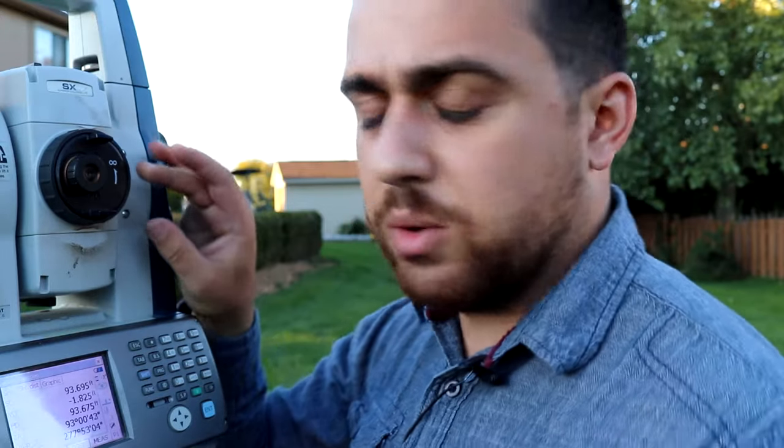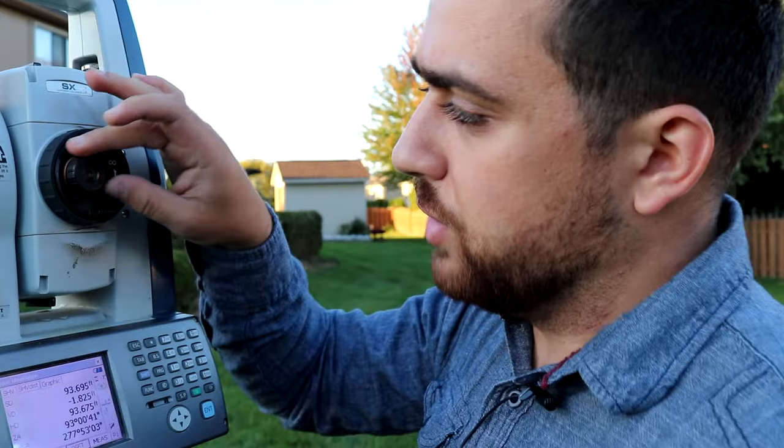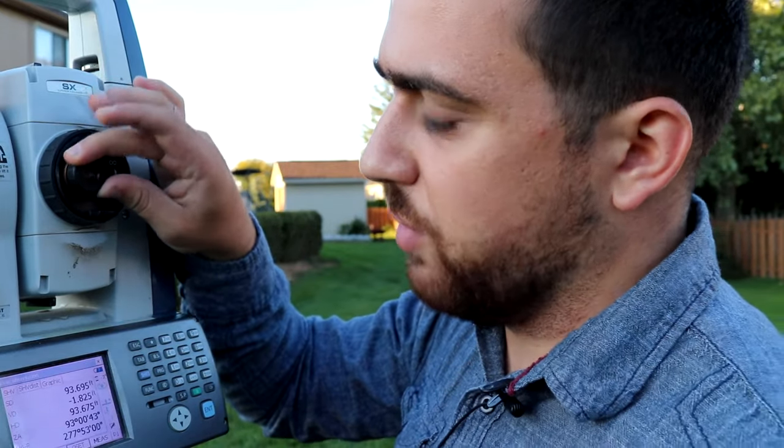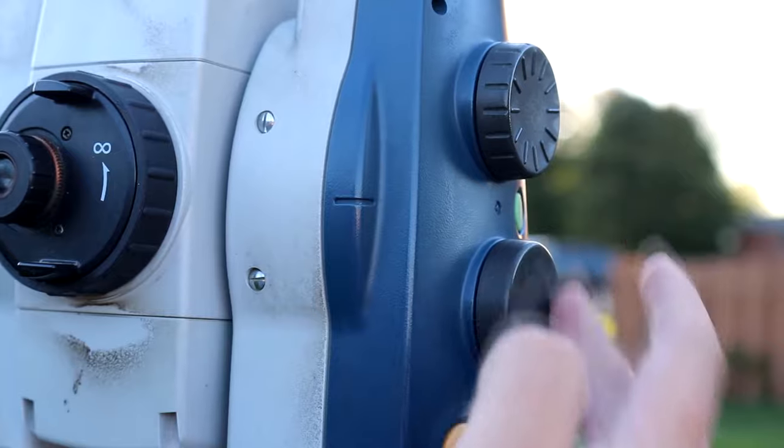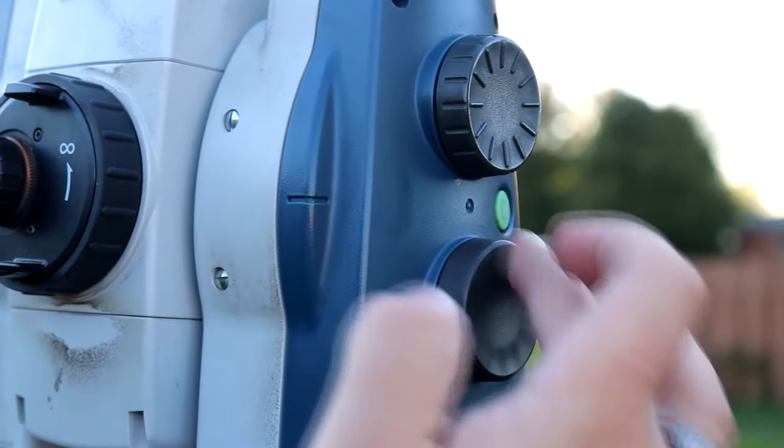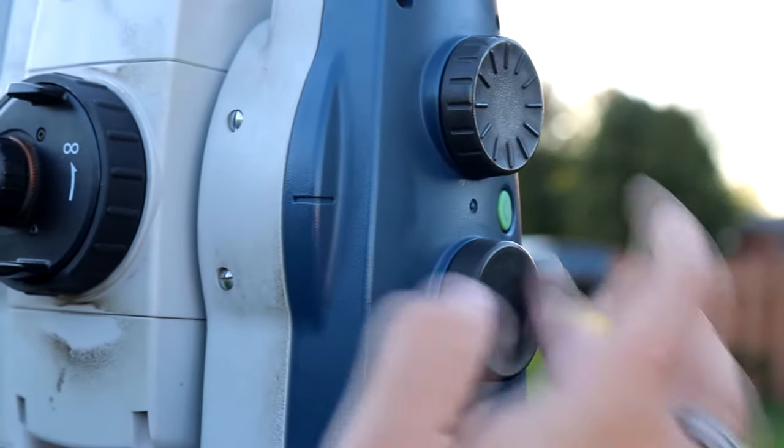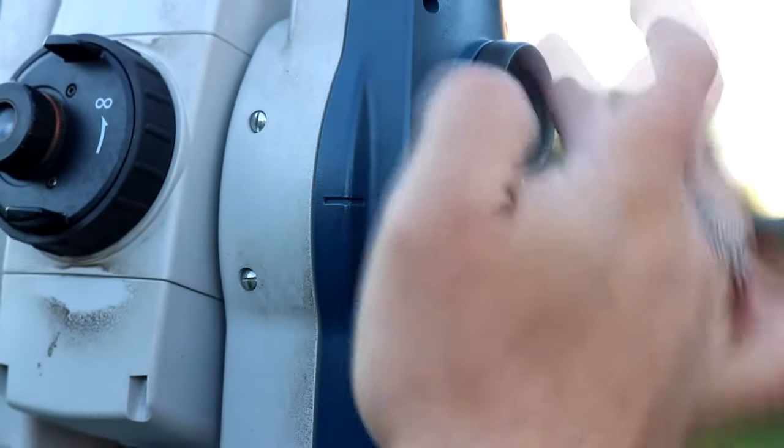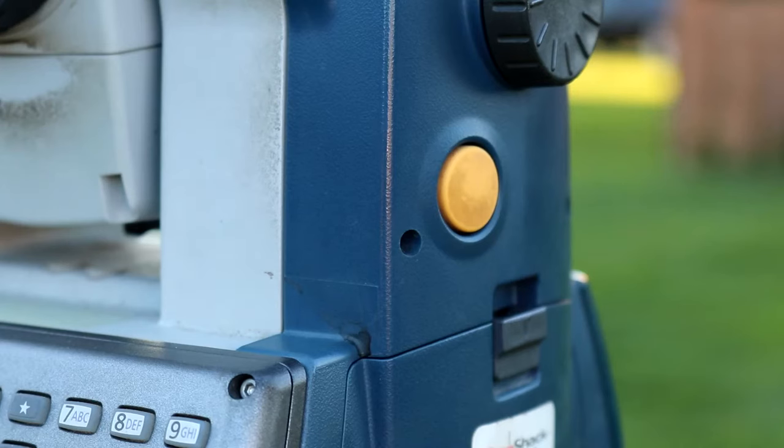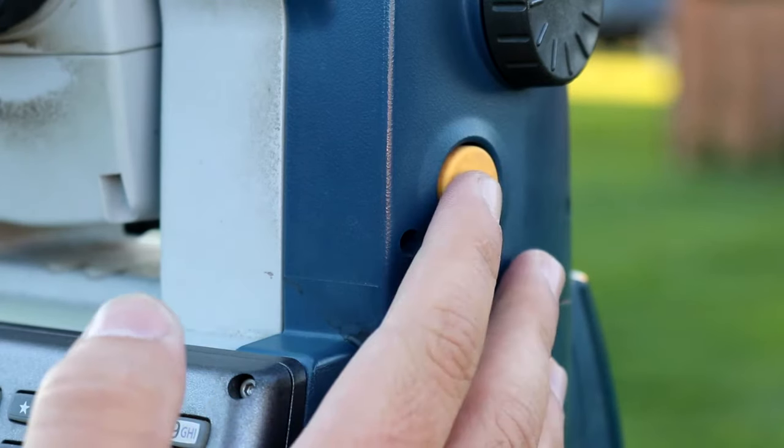This ring right here allows us to focus our sight so that we can see the rod and the prism nice and clear. This little one right here allows us to focus our cross hairs so that we can see where the center of our scope is at. The knobs on the side here are fine tuning knobs that make the instrument go left and right and make the scope go up and down. To take a measurement we simply press the record button.